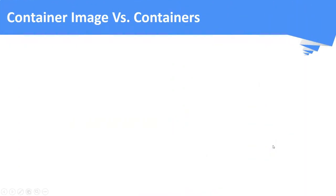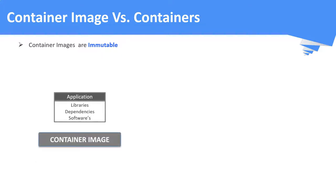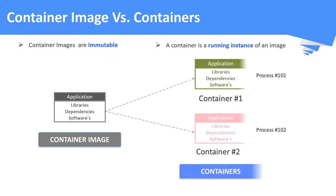What's the difference between a container image and a container? Container images are immutable, meaning you cannot change or modify the container image once it is created. The only way to change it is to build a new container image from scratch with the required changes as the next version of the image. On the other hand, containers are the running instances of an image. You can run two containers created from the same image, and these containers run the same application but with different process IDs.